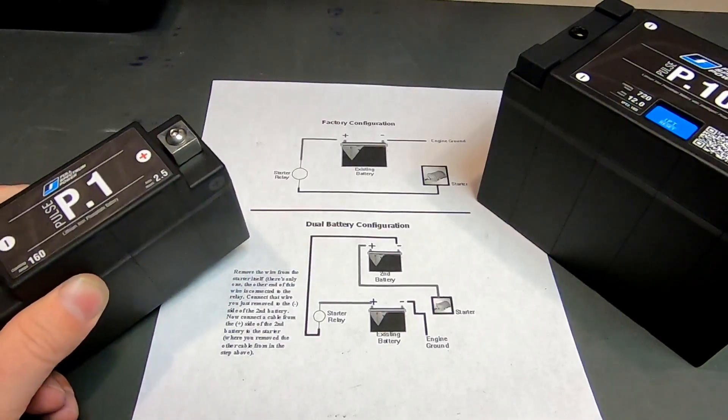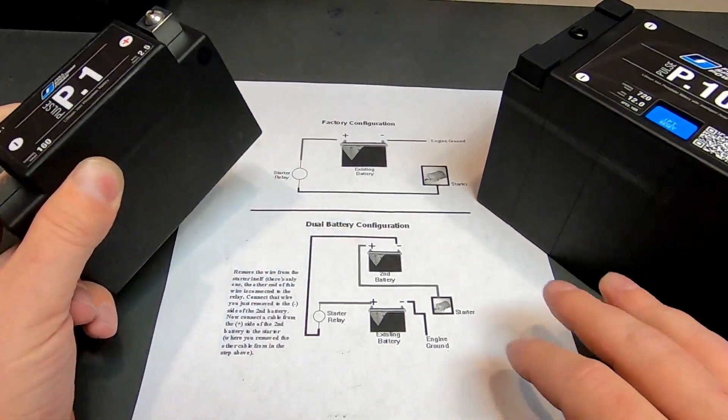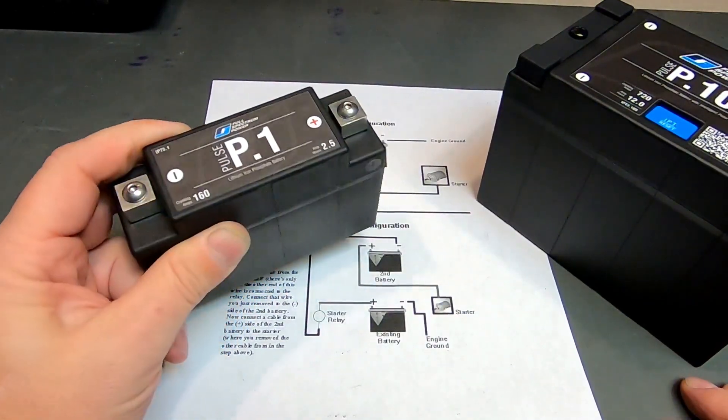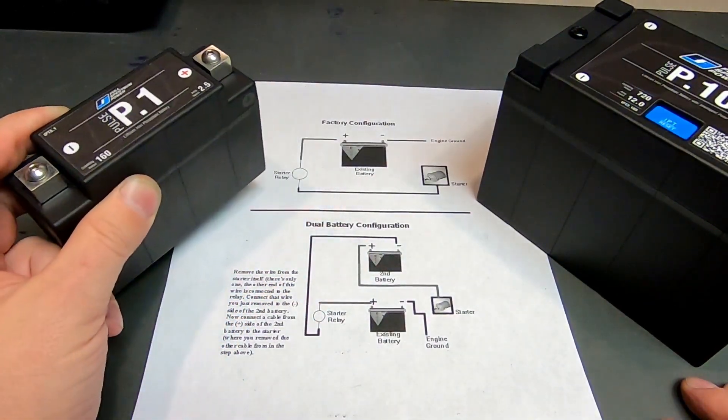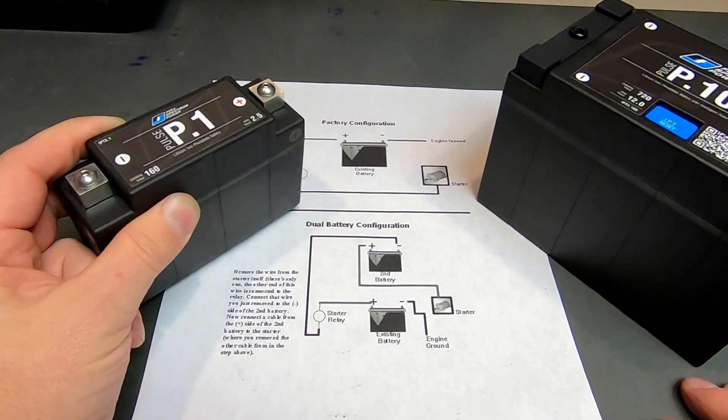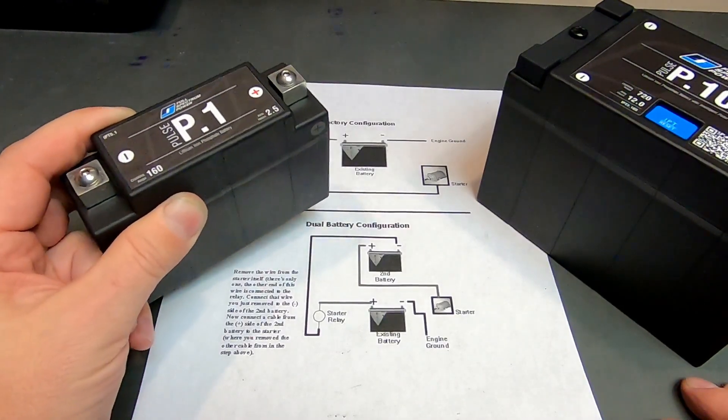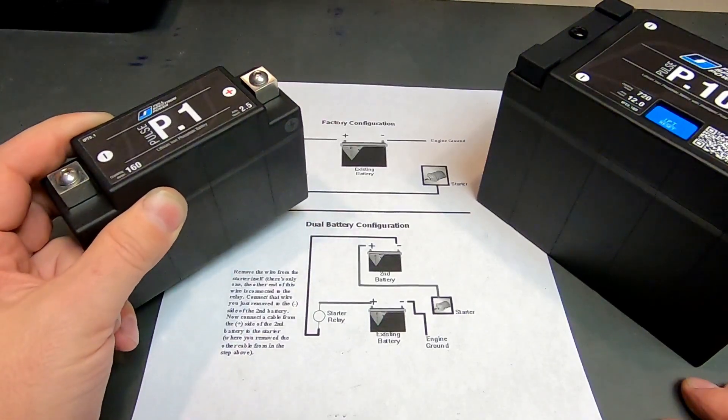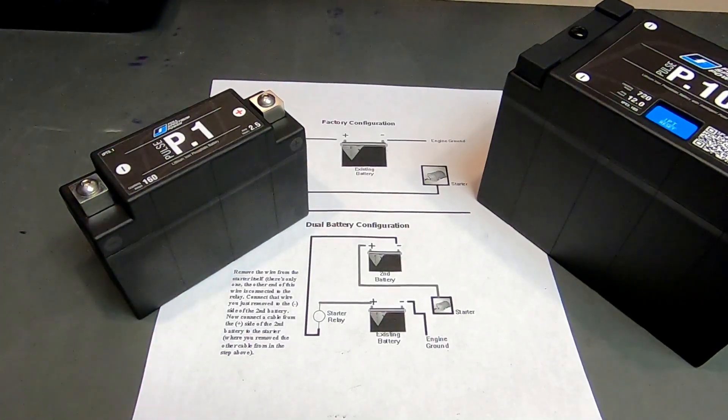One caveat: because of this configuration, the small battery—the 24-volt trigger—does not get recharged by your charging system. You will need to charge this battery separately using a lithium battery charger.